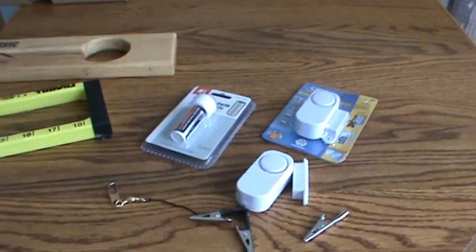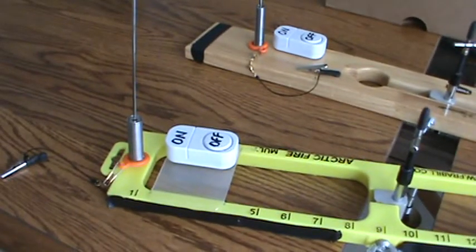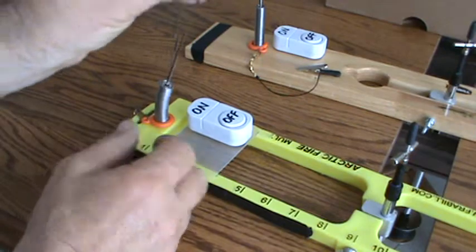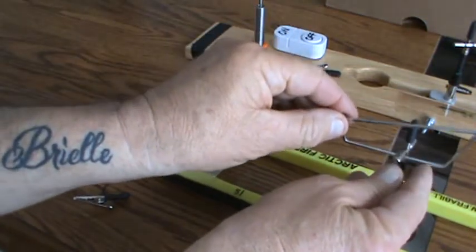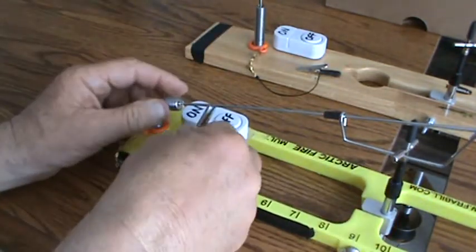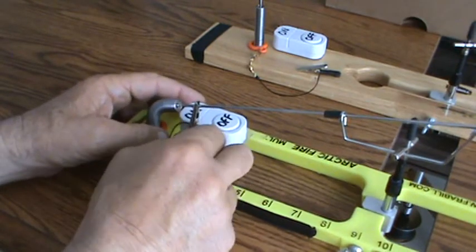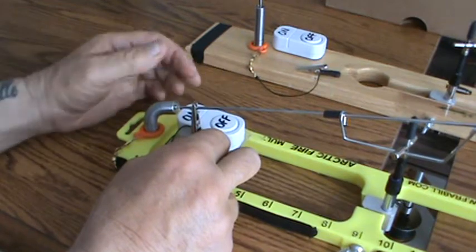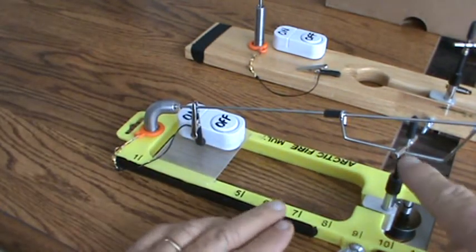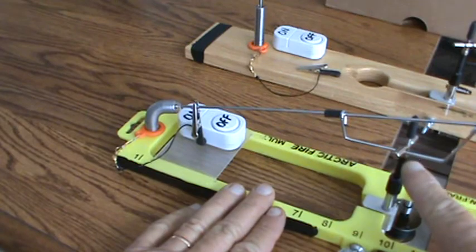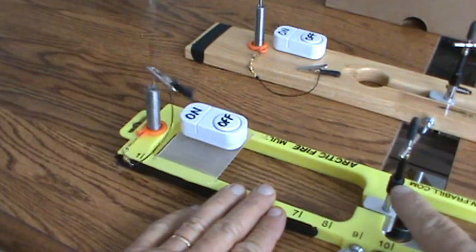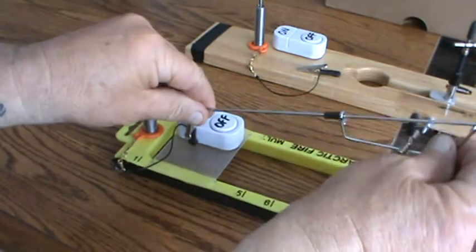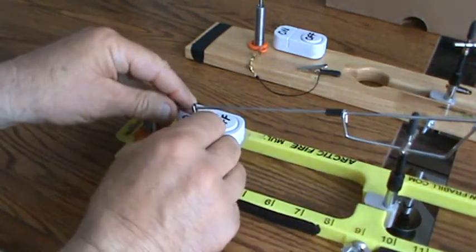How it works is you go ahead and set your tip up, clip onto the wire, and put your battery or your clip next to where it's supposed to be. You can also move this to wherever you need to. Sorry for the noise.